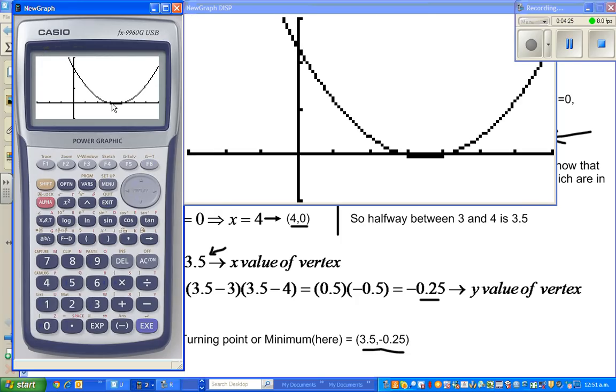So here's your quadratic equation. These are the two roots or x-intercepts. This halfway is the vertex or the minimum, and this is the y-intercept. So let's check it.